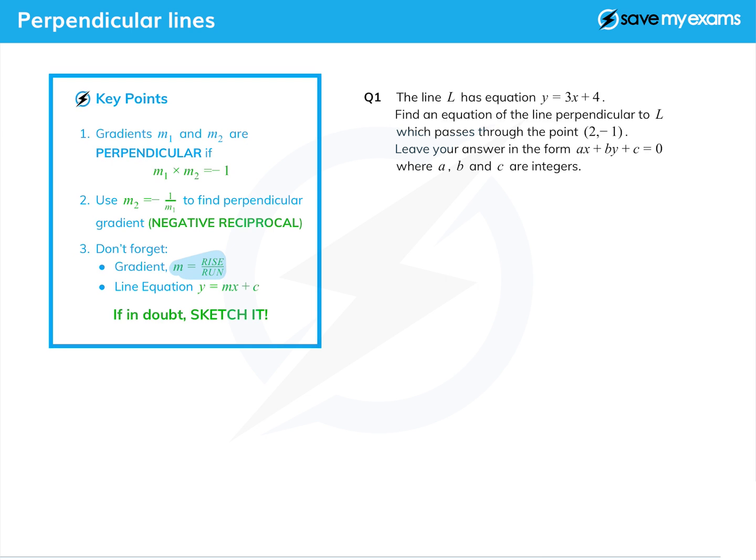To find the gradient when given a couple of points, it's rise over run, or the difference in the y's over the difference in the x's.